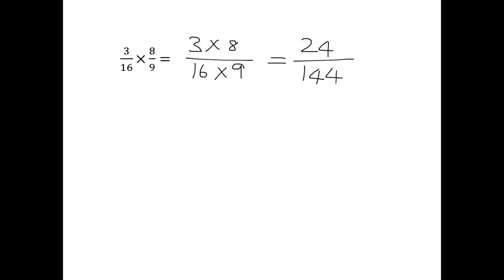Once we get to that, our answer is 24 over 144. But of course, we like to write our fraction in simplest form. I can see that 12 will go into both 144 and 24. 12 goes into 144 twelve times, and into 24 twice, giving 2 over 12. That's still not in simplest form, so I divide by 2: 2 goes into 2 once, and into 12 six times, giving a final answer of 1 over 6.